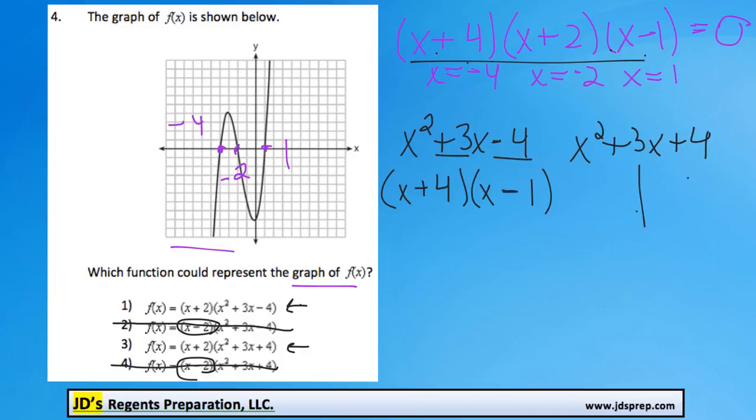And then for this one, two numbers that multiply to get positive 4 and add to get positive 3. And you know what? That's actually not possible. So you'd have to use the quadratic formula if you actually wanted to factor that.